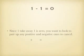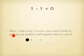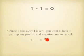Now, this may feel obvious that 1 minus 1 is 0. Since 1 take away 1 is 0, you want to look at pairing up any positives and negatives to cancel. So 1 plus negative 1 — pair them up — and they cancel, so that gives me 0.